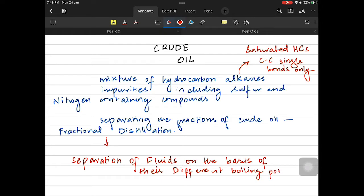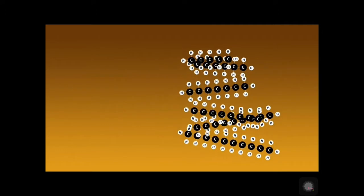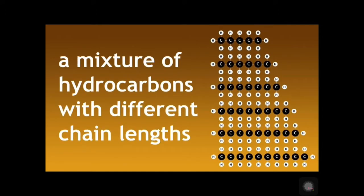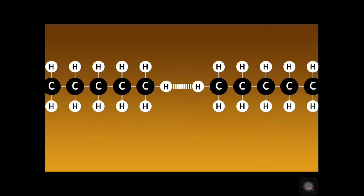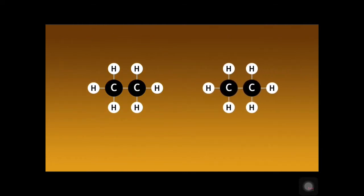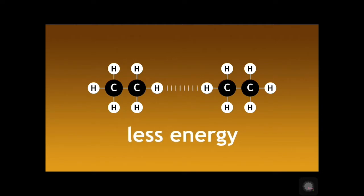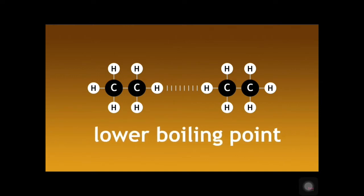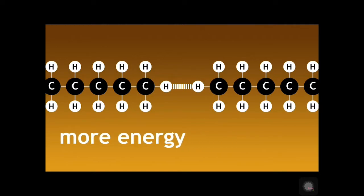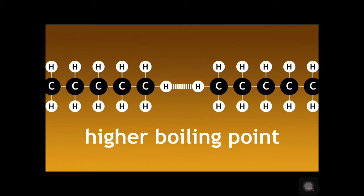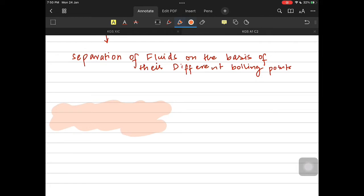Different alkanes can be separated from the entire system. When we have different alkane compounds — a mixture of hydrocarbons with different chain lengths such as methane, ethane, propane, and longer chains with eight or nine carbons — their intermolecular forces vary. With longer chains we have strong intermolecular forces, but with shorter chains we have weak ones, so shorter chains have lower boiling points while longer chains have higher boiling points.